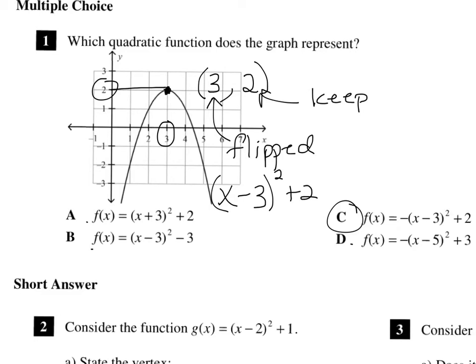One more thing I should point out: this is the correct answer not only because it's the only one with the correct numbers and signs, but see that negative sign out front? This parabola is upside down, so that is also why this one works. Make sure if it's upside down it has a negative in front, and if it's right side up it has a positive number out front.